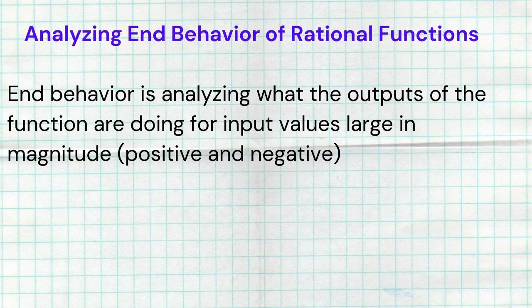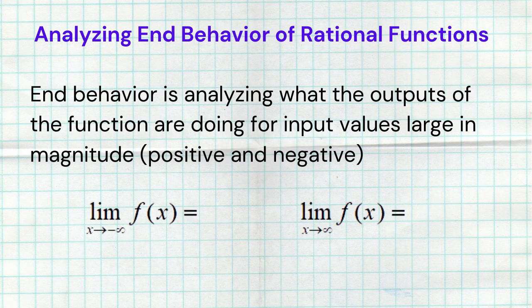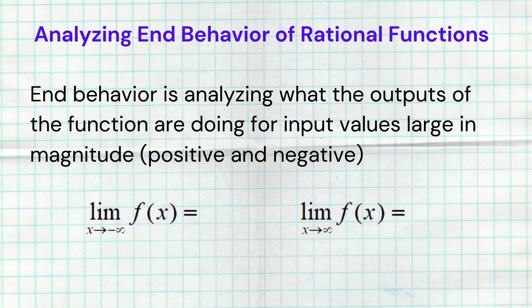So how do we exactly analyze the end behavior of a rational function? First, we've got to remind you what end behavior is all about. End behavior is analyzing what the outputs of the function are doing for input values large in magnitude, either positive or negative. We're talking about numbers like x being 100, 200, 500, 5,000, 10,000, 1 million. What we're talking about is the limits — the limit of our function as x goes towards positive infinity, and then the limit as x goes towards negative infinity.